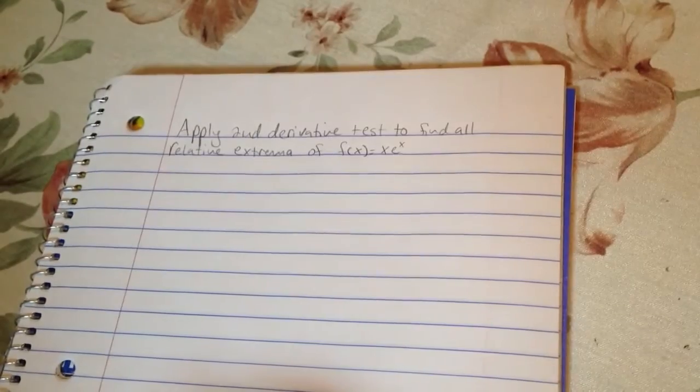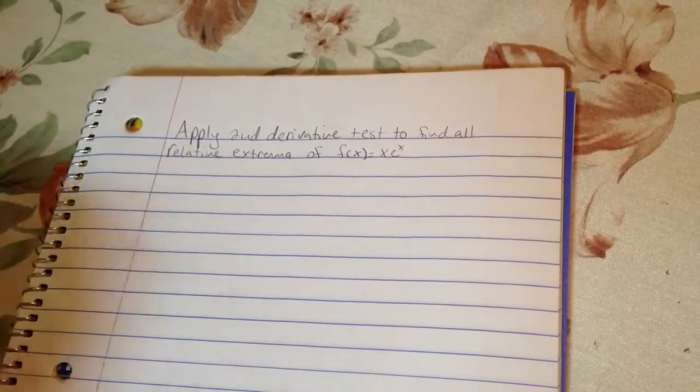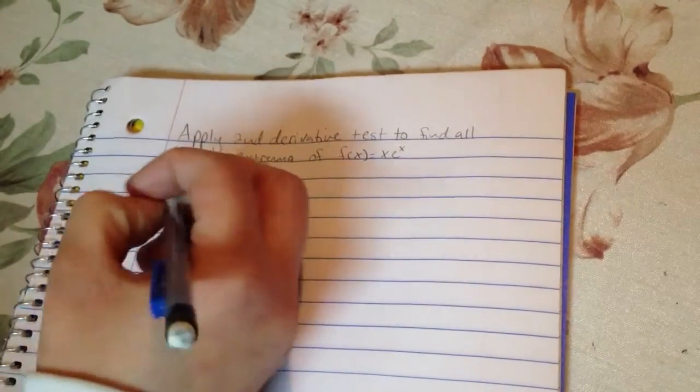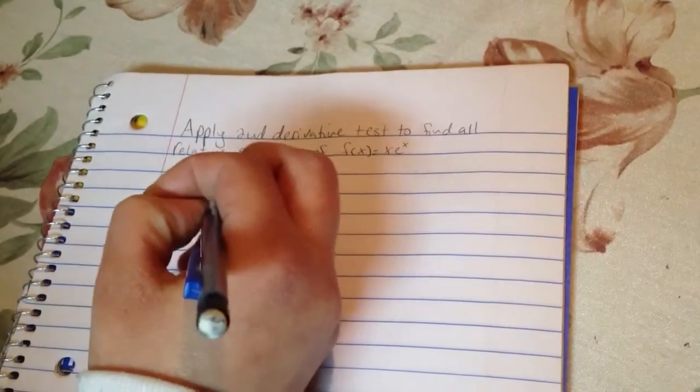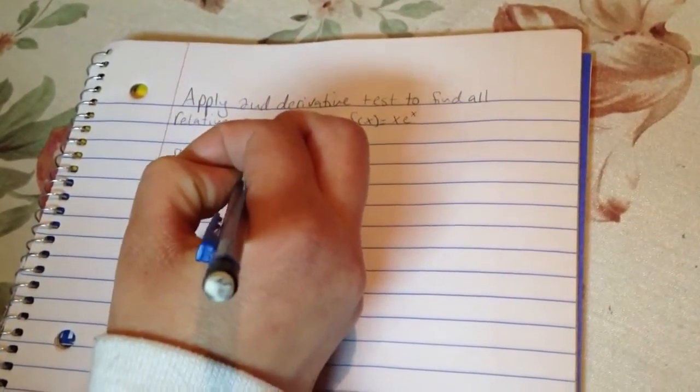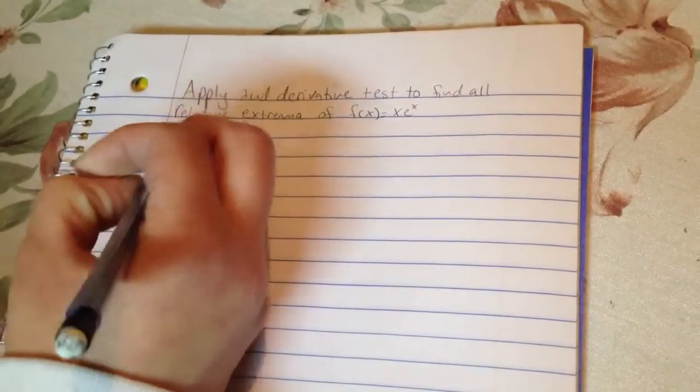So the first thing we're going to do is just solve for the first derivative and the second derivative. So we'll write down the function again, which is x times e to the x.